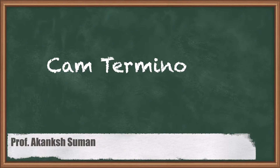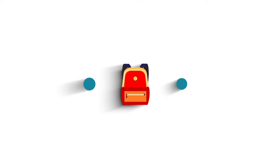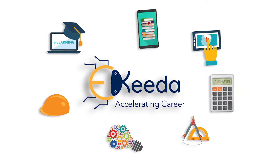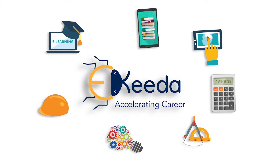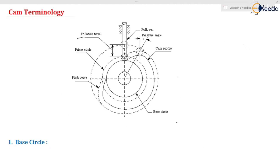Hello everyone. Now we are going to discuss the next section, that is cam terminology. Already in the last sections we have completed the classifications of the cam and the follower. This is cam terminology — the terms that are going to be used in the cam and the follower. You can see this is the diagram of the cam and follower, with different types of angles, profiles, and circles.